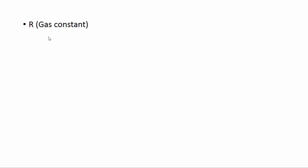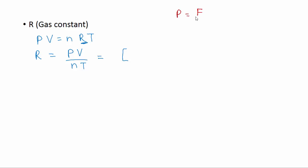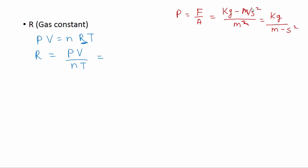To find the unit of gas constant R, we use PV = nRT, rearranged as R = PV / (nT). We plug in units of pressure, volume, number of moles, and temperature. For pressure, since P = force/area, force has units kg·m/s² and area is m², so pressure = kg·m⁻¹·s⁻².